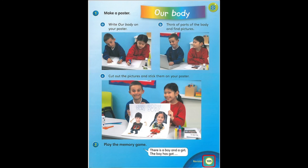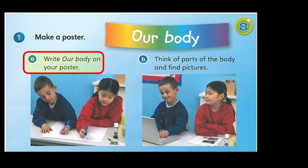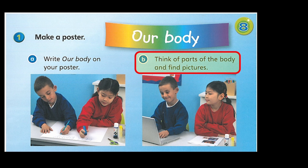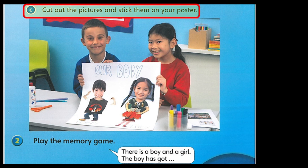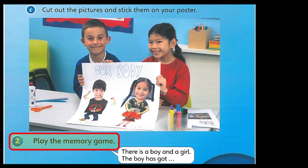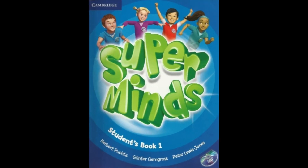Page 105. 1. Make a poster: Our body. A. Write 'our body' on your poster. B. Think of parts of the body and find pictures. C. Cut out the pictures and stick them on your poster. 2. Play the memory game. There is a boy and a girl. The boy has got...